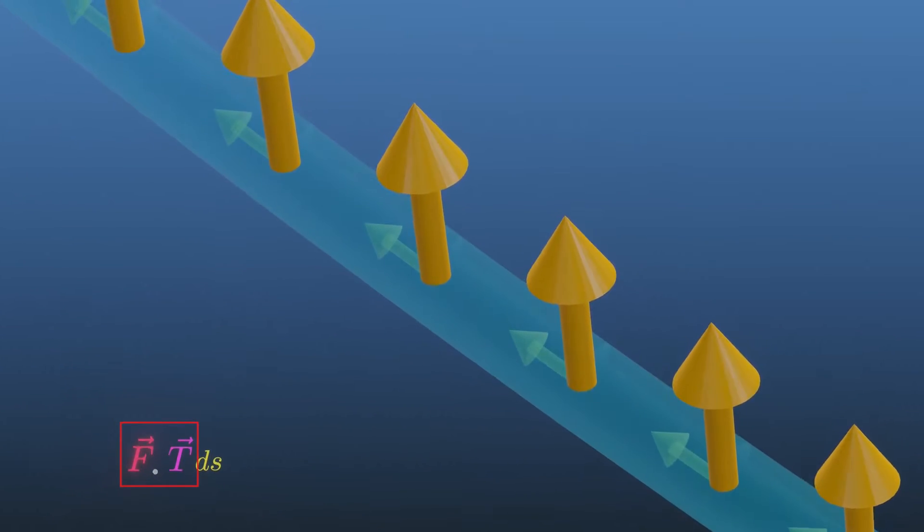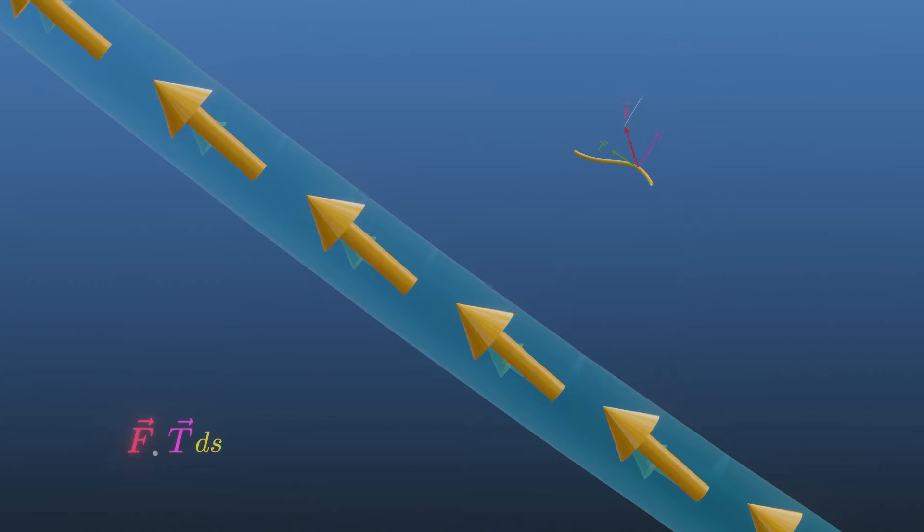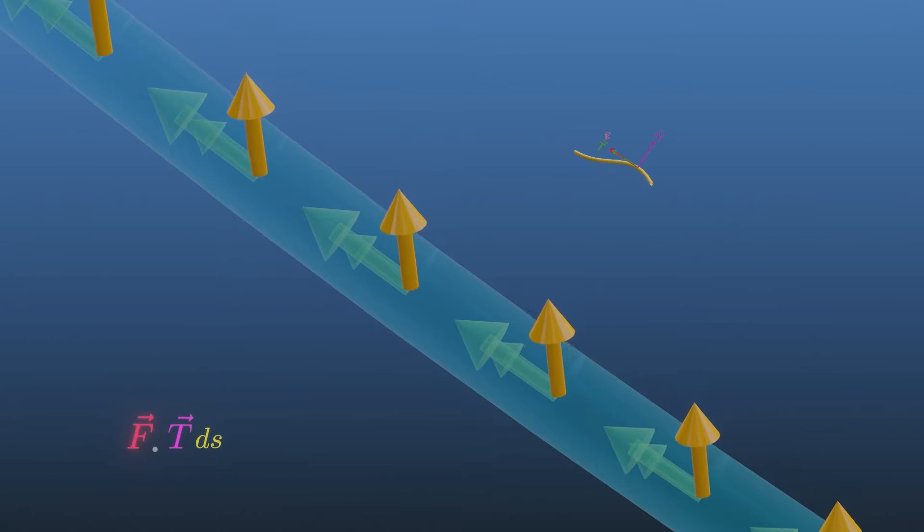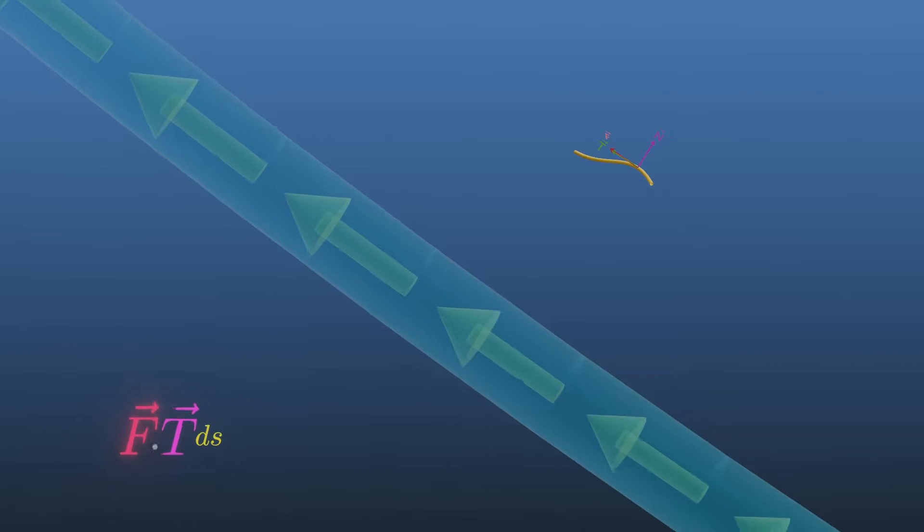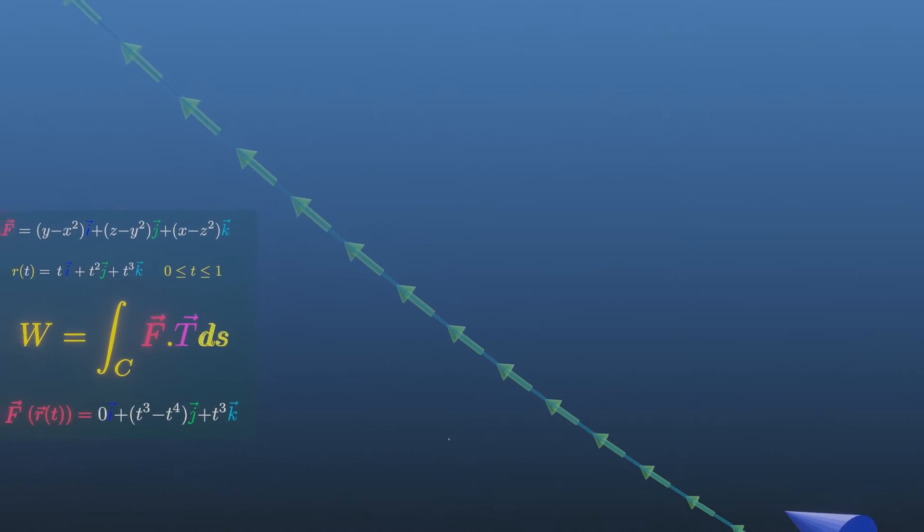This is the dot product, and it is a scalar quantity. Here we are projecting every force vector in the direction of the unit tangent vector of the curve. I'm multiplying the magnitude of this tangential component of force with the small arc length of the curve.